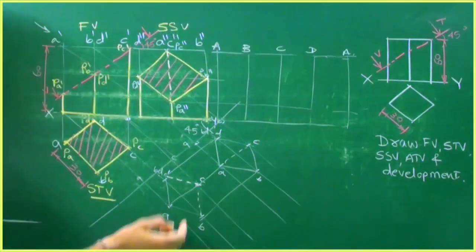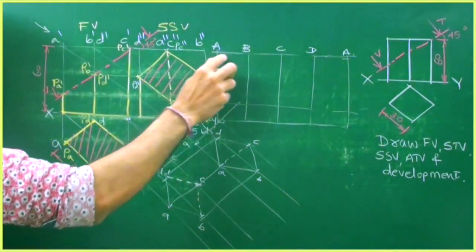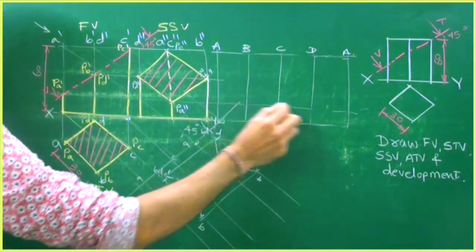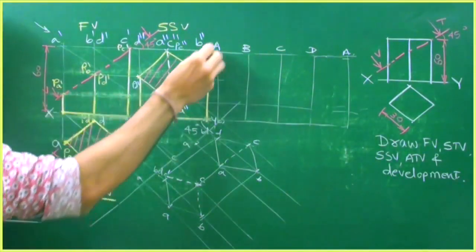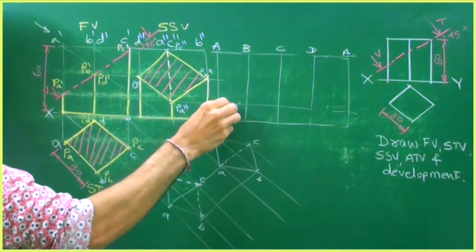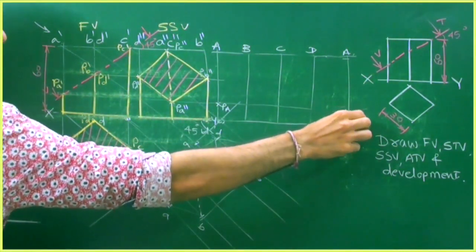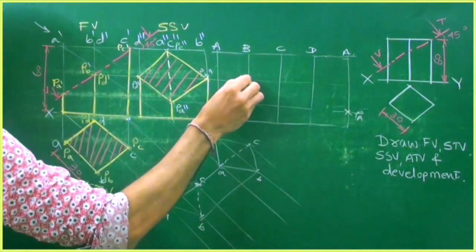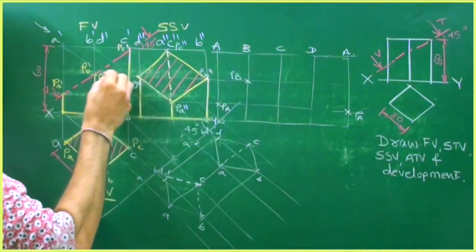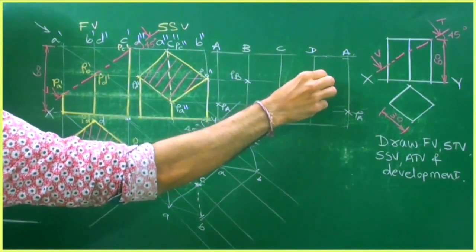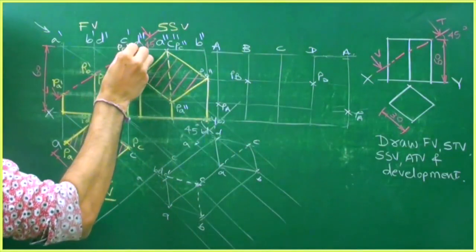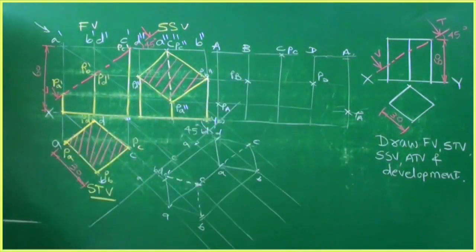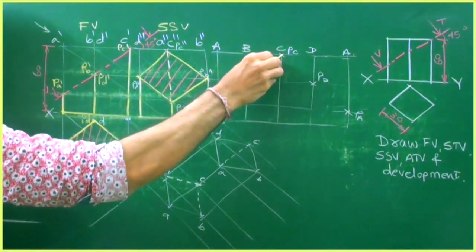Now we will draw the development — we write in capitals, so A, B, C, D, A. Taking a line from Pa dash, wherever it cuts on A that is point Pa. Extend B and D — wherever it cuts on B that is point Pb, and this is point Pd. Extend C — wherever it cuts on C that is point Pc. Now join this.